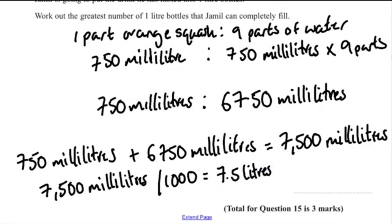Convert 7,500 ml to litres by dividing by 1,000: that equals 7.5 litres. The greatest number of 1-litre bottles Jamil can completely fill is 7.